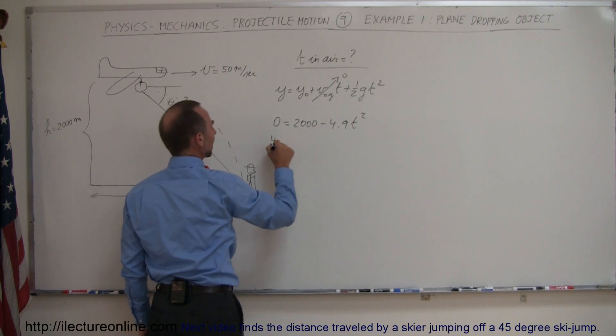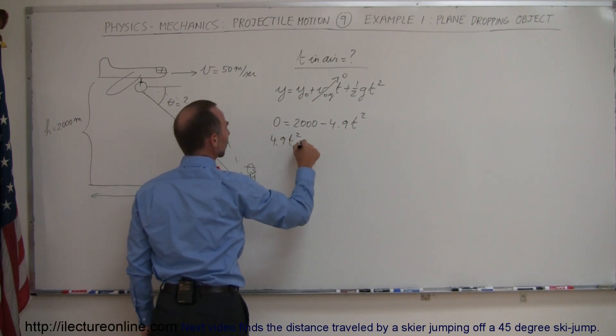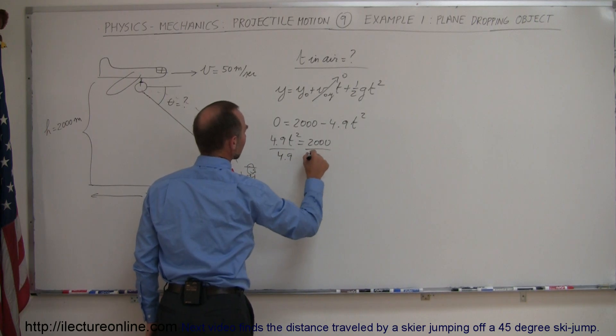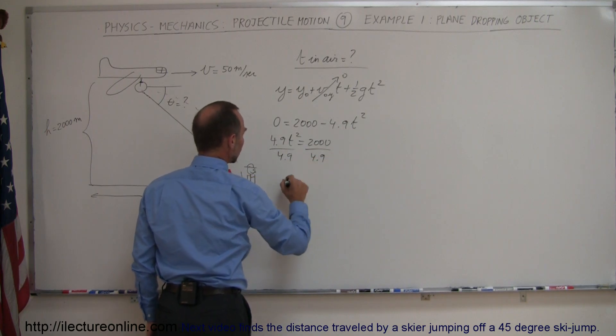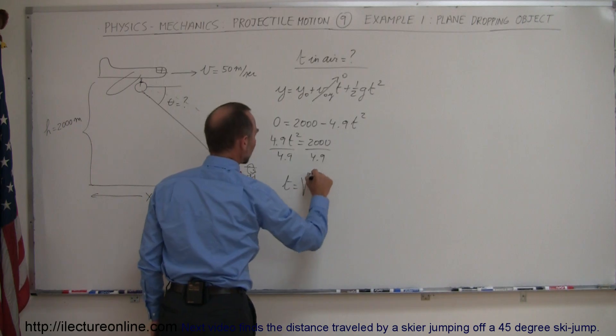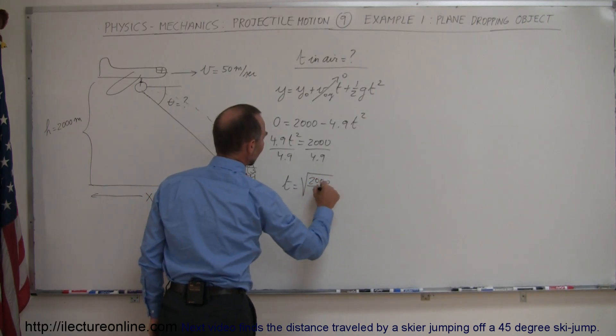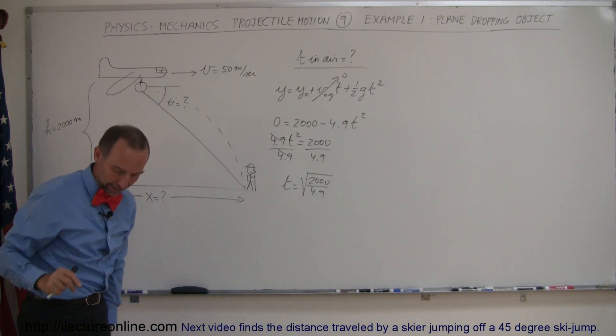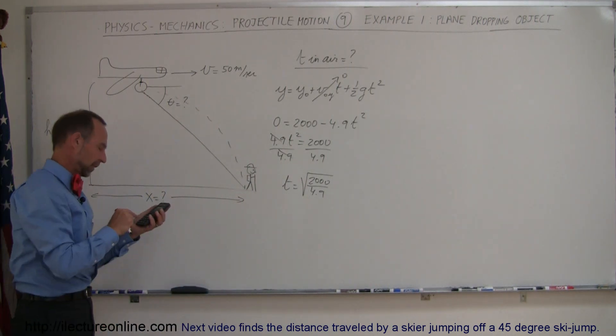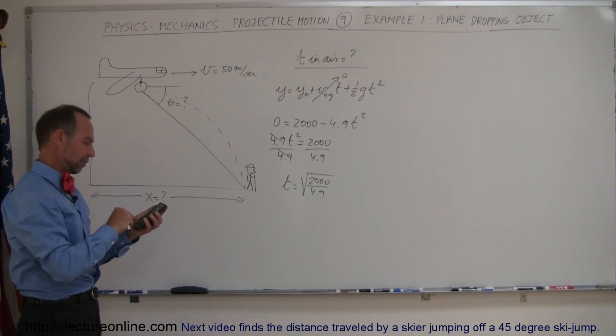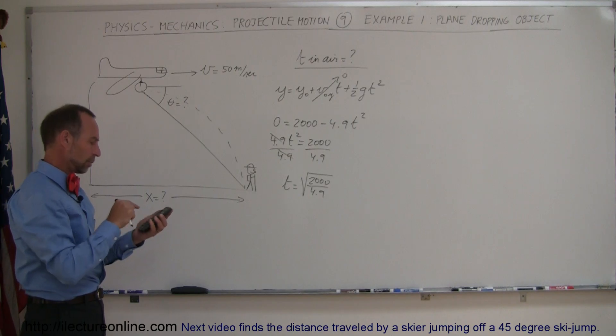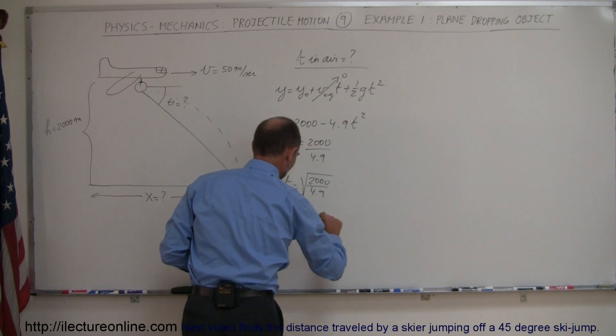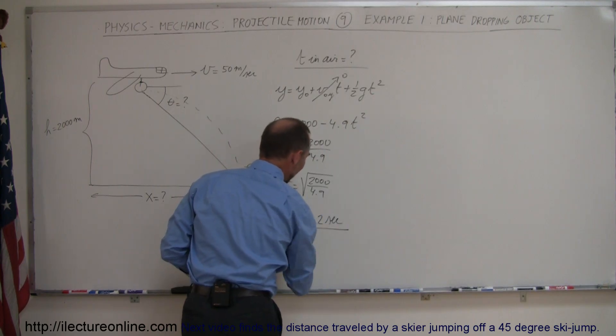Moving that over here, we can get that as 4.9 t squared equals 2,000. Divide both sides by 4.9, and taking the square root, we can say that t is equal to the square root of 2,000 divided by 4.9. Of course these cancel out, and let's see what that is equal to. 2,000 divided by 4.9, take the square root, and we have the time equals 20.2 seconds. So we have time in the air.